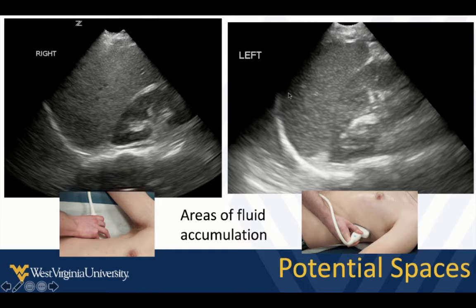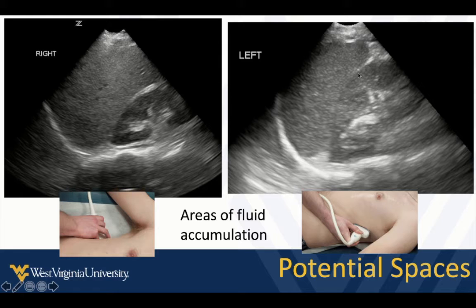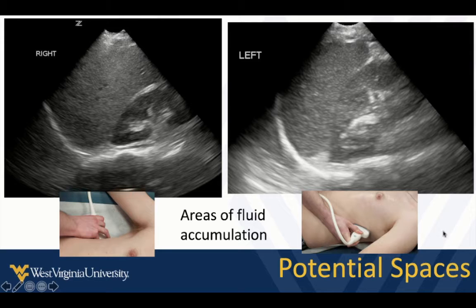On the left side, the sub-diaphragmatic area is more important because you're more likely to see fluid accumulate here. There is a splenorenal ligament that generally prevents fluid from getting between these two organs. So our potential spaces are sub-diaphragmatic and up around in here — there's kidney, there's spleen. These are some of the first areas to look for fluid accumulation in the peritoneal space.